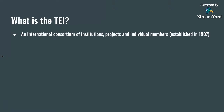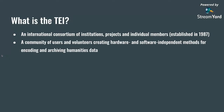So what is the TEI exactly? It's an international consortium of institutes, projects, and individual members within and outside of the academy. It was established in 1987 and is still a very vigorous organization. It's also a community of users and volunteers creating hardware and software independent methods for encoding and archiving humanities data. The TEI was primarily established for archival purposes and for creating consistent vocabularies to make this data interoperable and shareable.